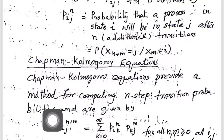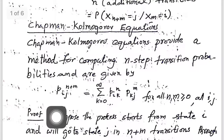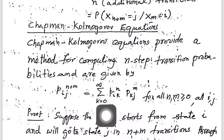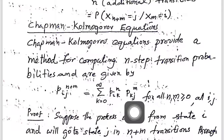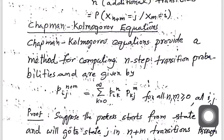Chapman-Kolmogorov equations provide a method for computing n-step transition probabilities. The Chapman-Kolmogorov equations are given by the formula: P_ij^(n+m) equals summation over state k from 0 to infinity of P_ik^(n) times P_kj^(m). This is true for all m, all n, and for all states i and j.